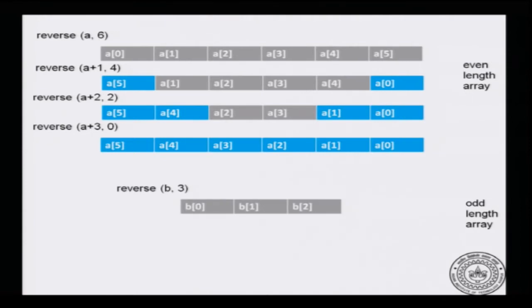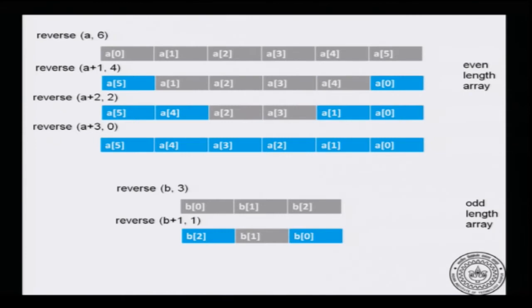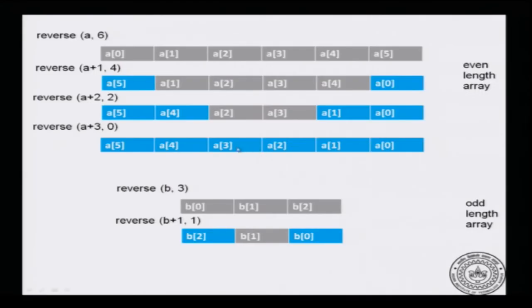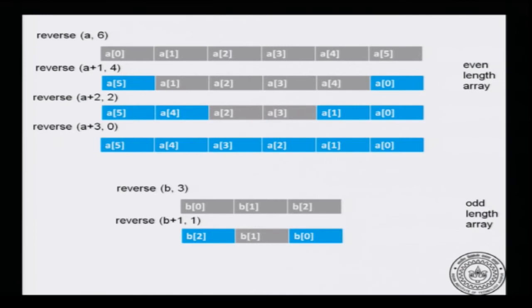For an odd length array, take a small array with three elements. Swap b[0] with b[2]. At this point, you have a subproblem with exactly one element, and you do not need to reverse that — it is its own reverse, so the problem just stops there. Notice the difference: for an even length array, the step just before the last involves an array of size 2 that still needs reversing. For an odd length array, the last step involves a single-element array. So there are two base cases: subarray of size 0 (even length arrays) and size 1 (odd length arrays).